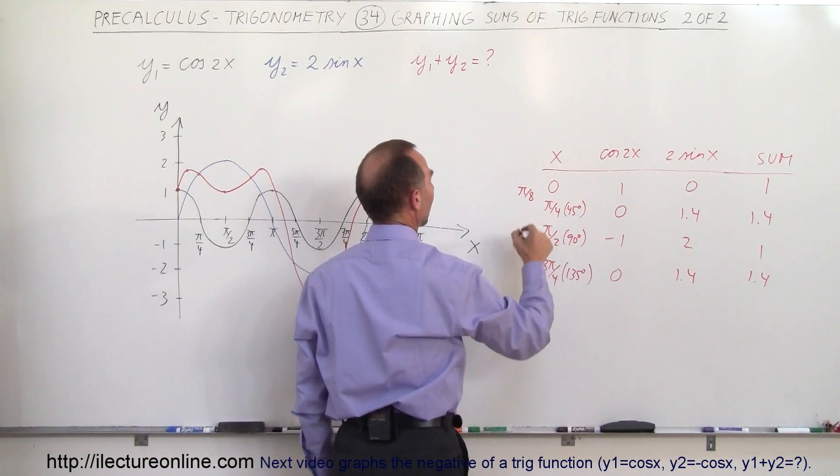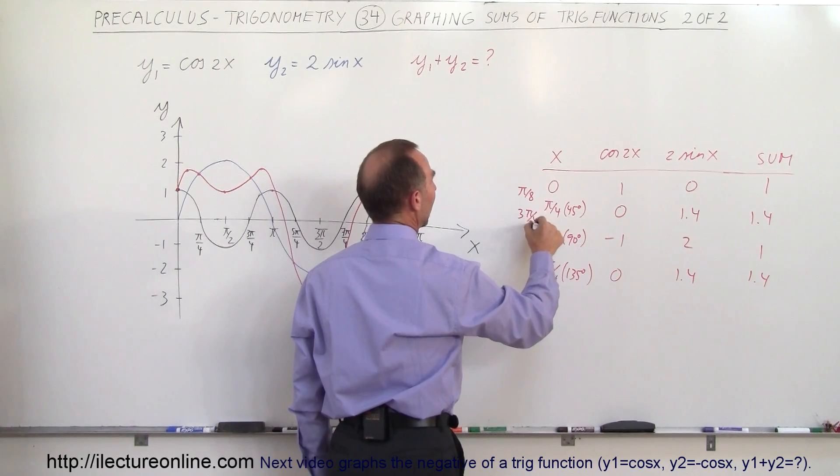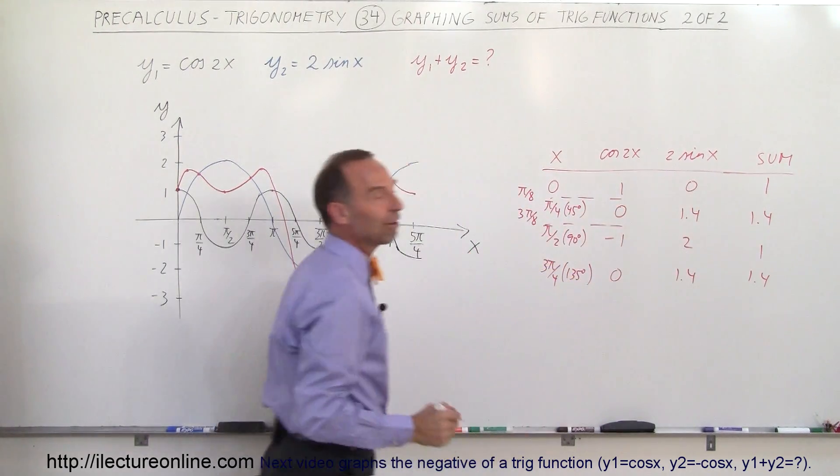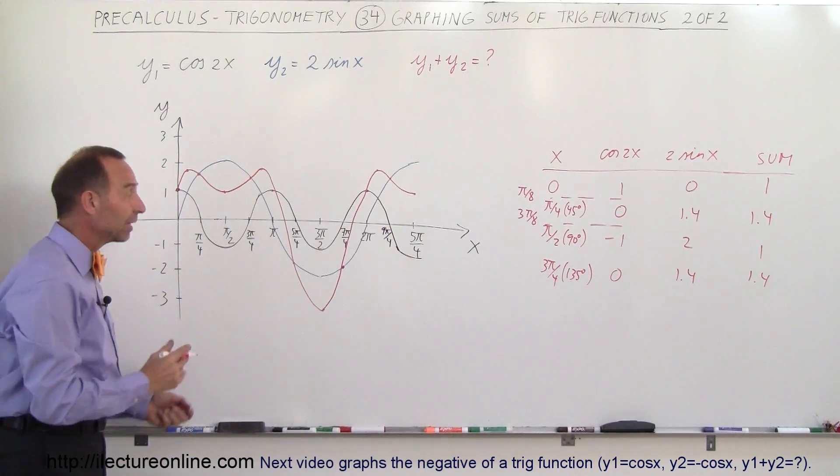For example, you may try pi over 8, and then 3 pi over 8, and get some in between values, and then you get a more accurate graph in the end when you sum them together. But that's how we do that.